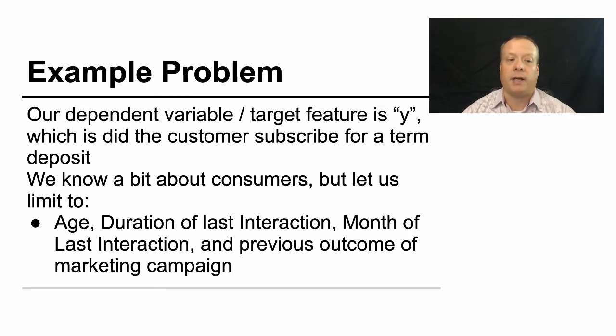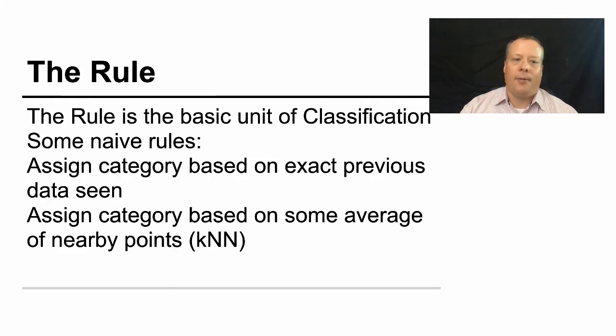We know a bit about the consumers, but let us limit what we're going to talk about today to the age, duration of last interaction, month of last interaction, and previous outcome of the marketing campaign. The rule is a basic unit of all classification, and we've talked about this before when we talked about the antecedents of consequence and support and lift and all that.